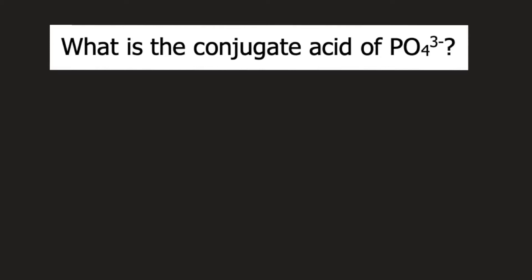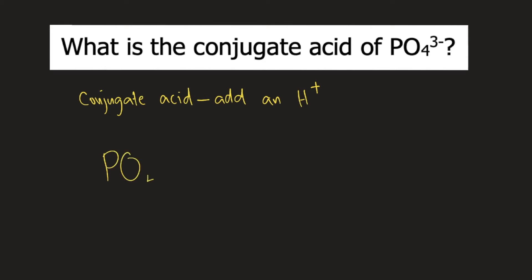What is the conjugate acid of PO4 3-? If you want to determine the conjugate acid, what you need to do is add an H-plus to the ion or to the molecule. So in our problem, the given is PO4 3-. What you need to do is add an H-plus, so plus H-plus.